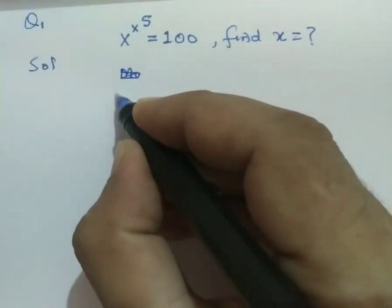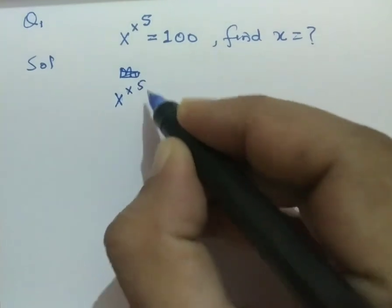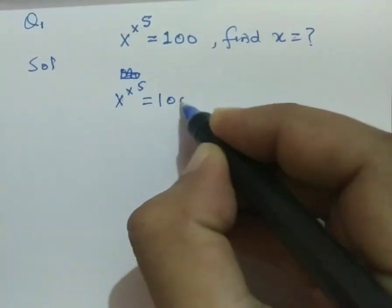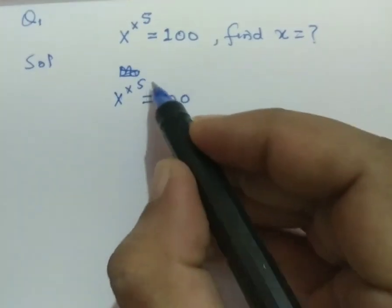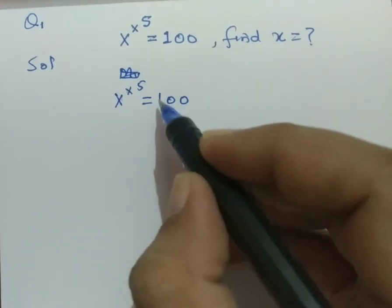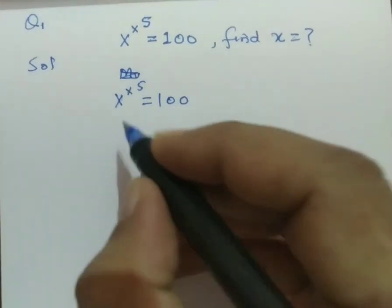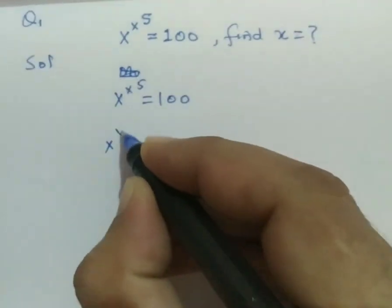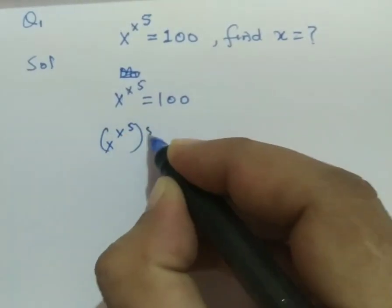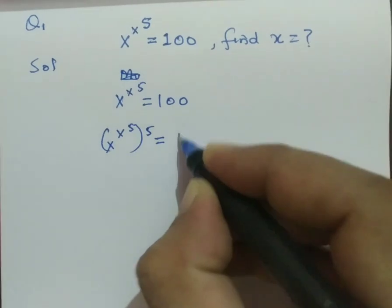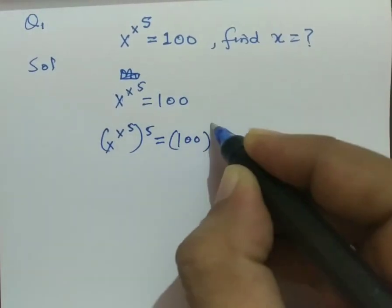We have x raised to the power x raised to the power 5 equals 100. So multiply this basis by exponent 5. x raised to the power x raised to the power 5, multiplied by 5, equals 100 raised to the power 5.